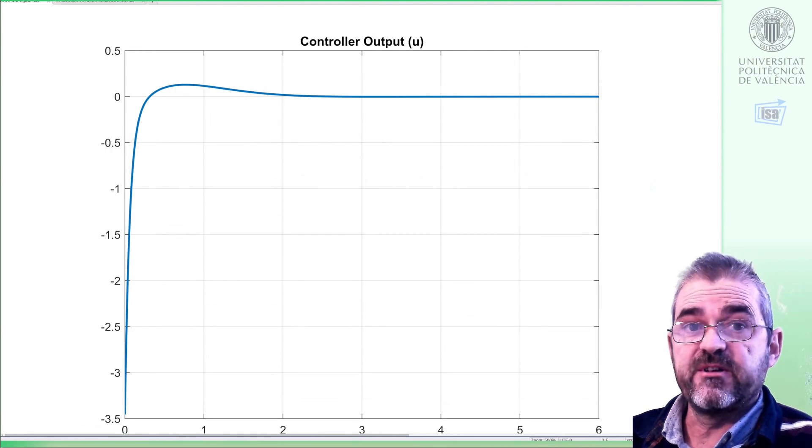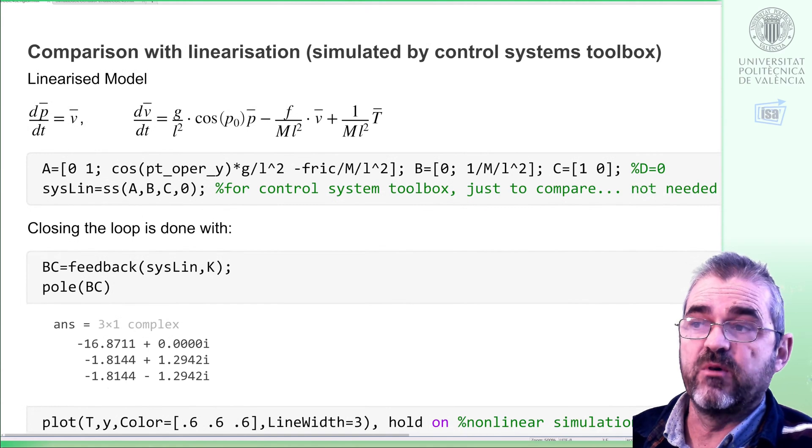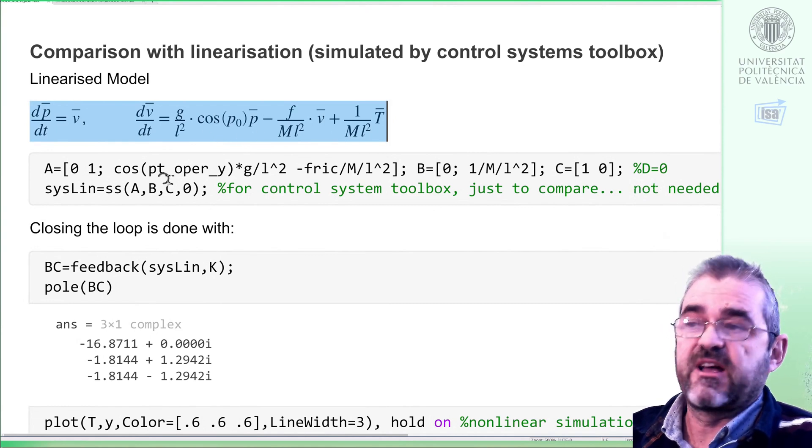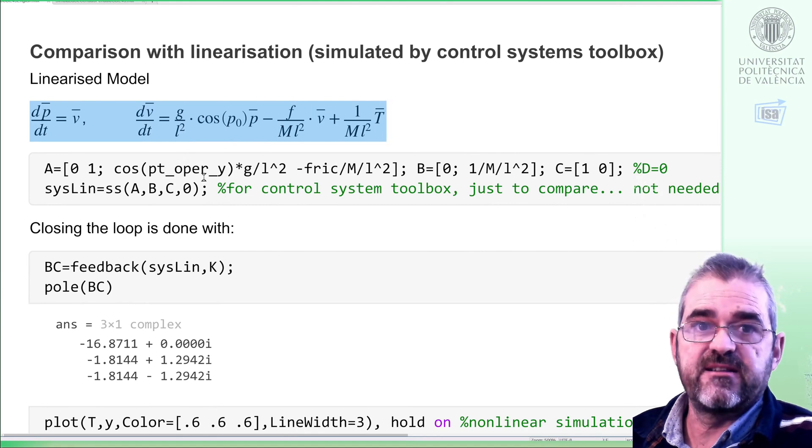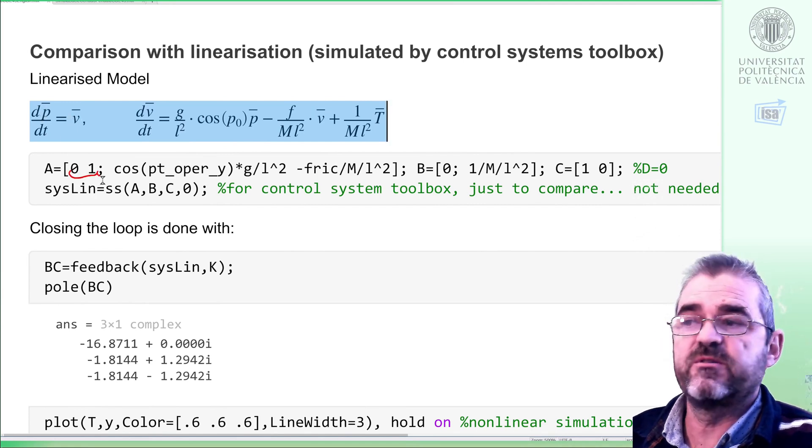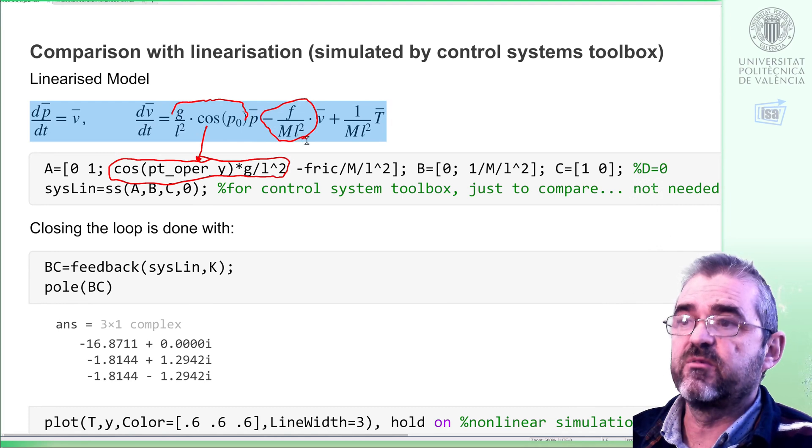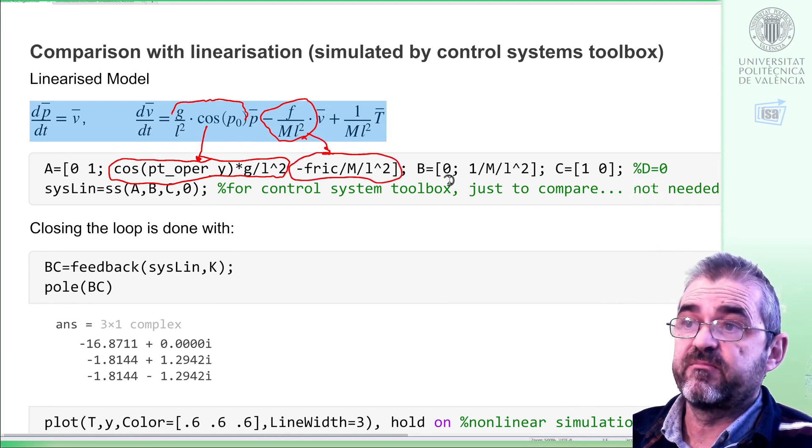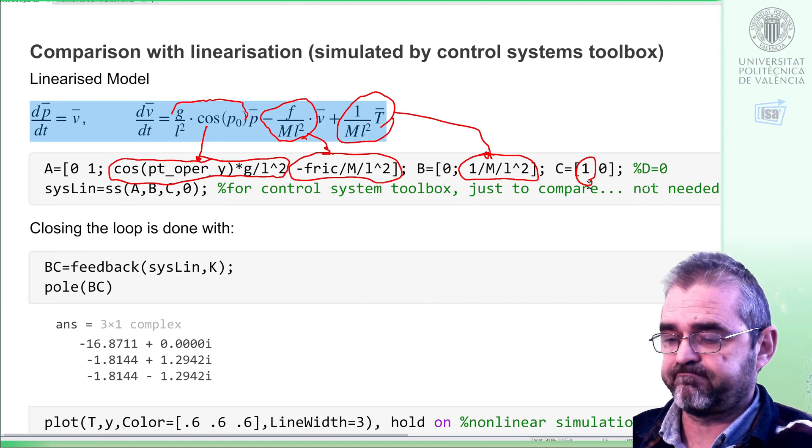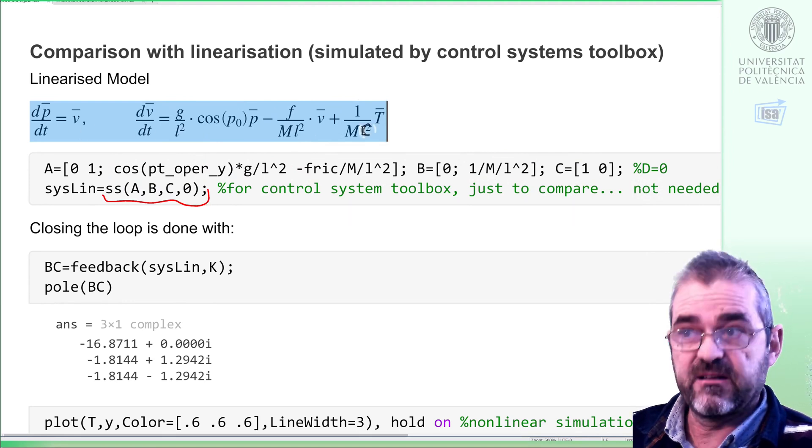Let us now compare this nonlinear simulation with the linear simulation we would have obtained if we had simulated with the control system toolbox the linearized model. You can check that this is the linearization of the pendulum equations, and the cosine of the operating point is just one in this case, the unstable one. So this A matrix is that the derivative of the first state is the second one, this row zero one, and this thing that multiplies the increment of position is here, and this thing that multiplies the increment of speed is here, and this element that multiplies the increment of torque is here, and output is the position. So with this, I built a control system toolbox object, encapsulating the state-space representation of this linearized model.